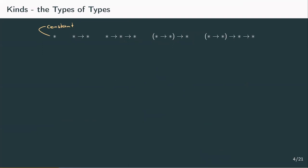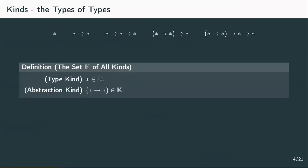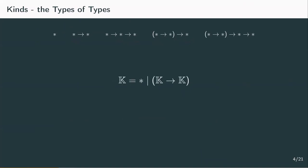We can define kinds properly and recursively using grammar notation from formal language theory. The single star is a kind by itself — it's inhabited by every type. If we have two kinds, we can combine them by an arrow, and this is inhabited by a type abstraction with the first kind as input and the second as output. With these kinds we can express the structure of a type abstraction just like we were able to express the input-output structure of term abstraction with types.